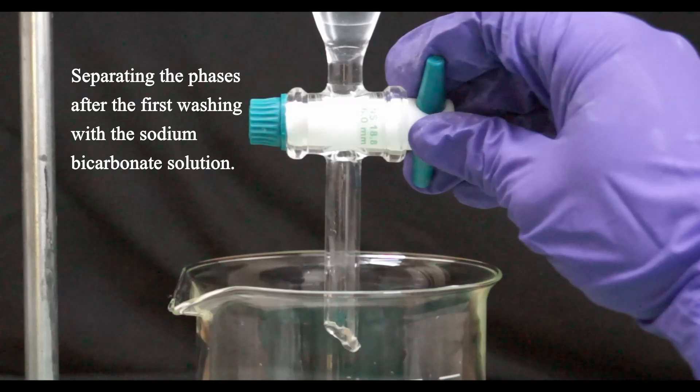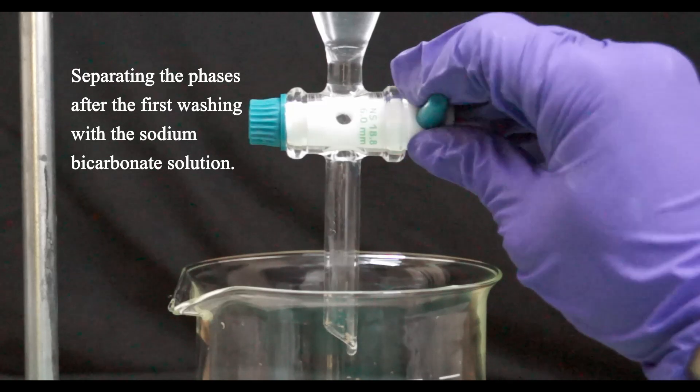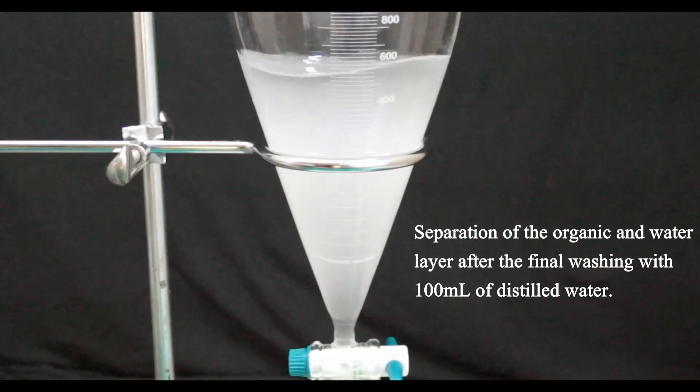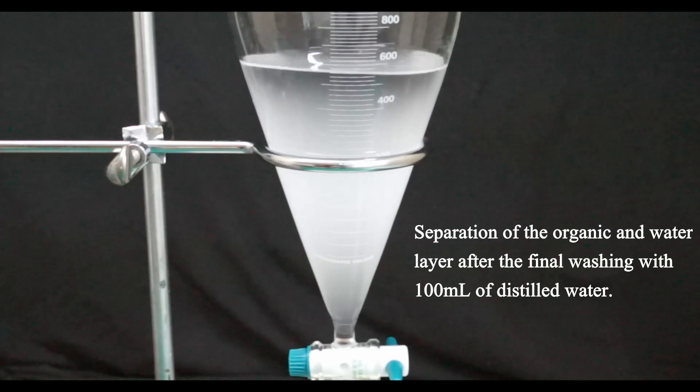After careful shaking and frequent venting the phases are separated and the washing is repeated two more times. On the second addition of sodium bicarbonate solution there was almost no gas evolution but to be sure that all of the hydrogen chloride was removed I performed the third washing with the sodium bicarbonate.